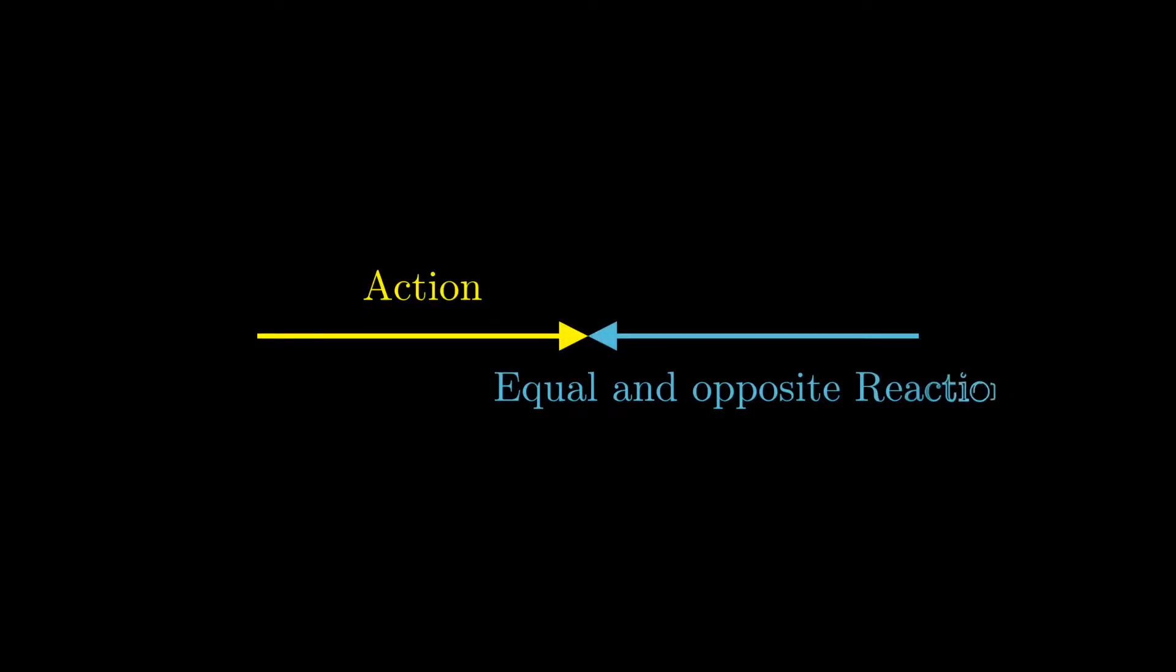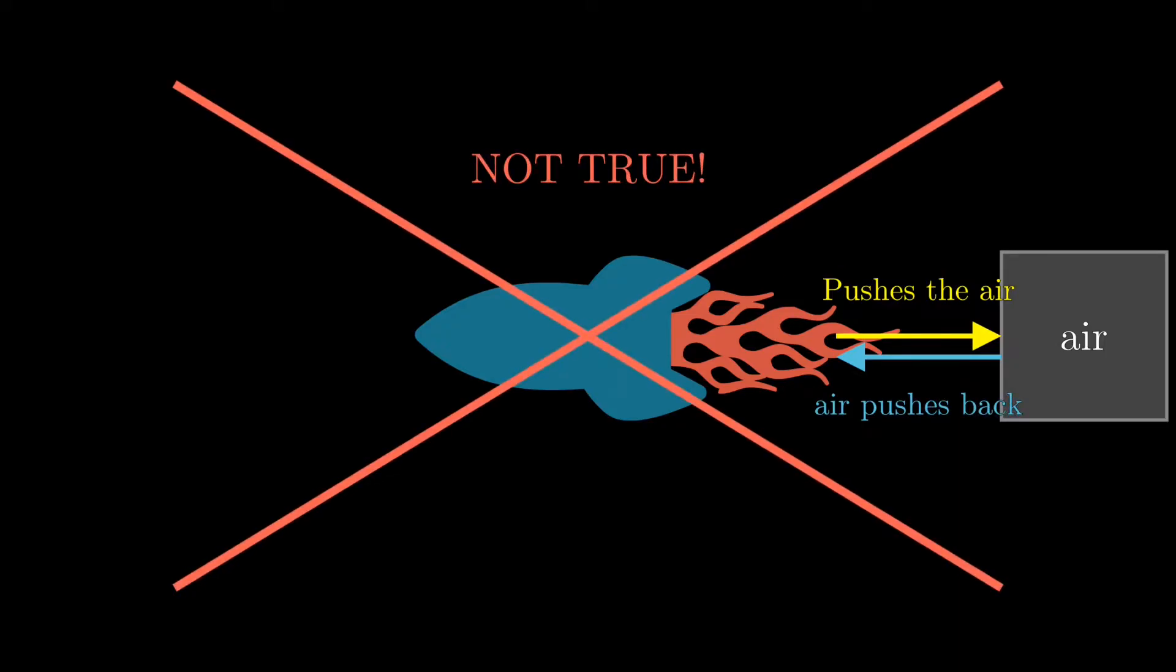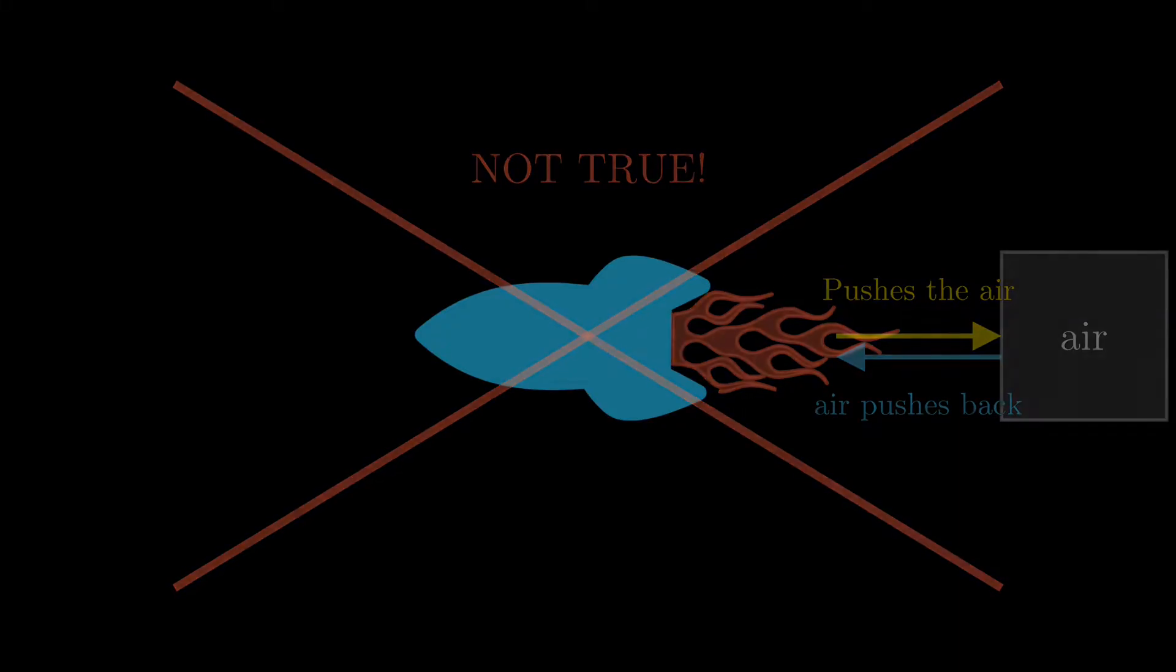Some people have misunderstanding about Newton's third law, such as rockets. They think that the rocket can move because it pushes the air behind it and thus the air pushes back. But it's not true, and the rockets literally do not need air in the first place.